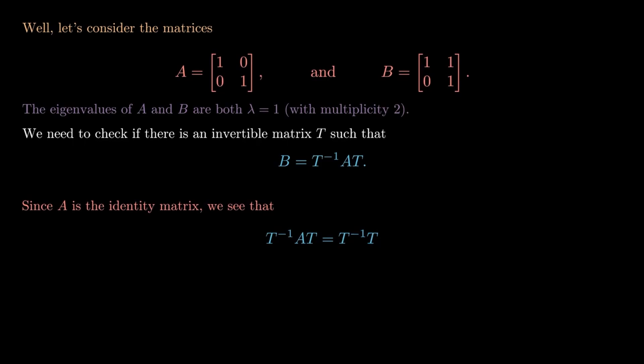But now T inverse T, well that's the identity by definition. So we see that T inverse A T is exactly the identity matrix.